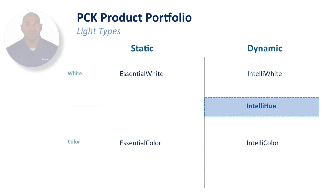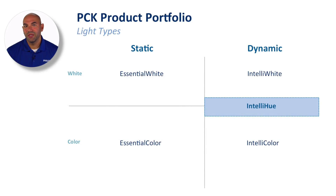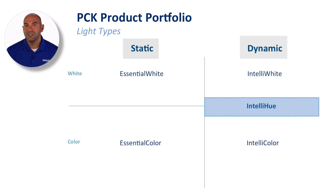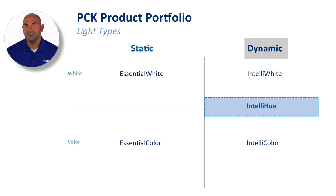When we talk about the light types in the portfolio, we can place everything into this four-way grid. The luminaires are either white light or colored light. Next, the luminaires are either static or dynamic. Static luminaires don't change color or color temperature, while dynamic luminaires have the ability to change color or color temperature.